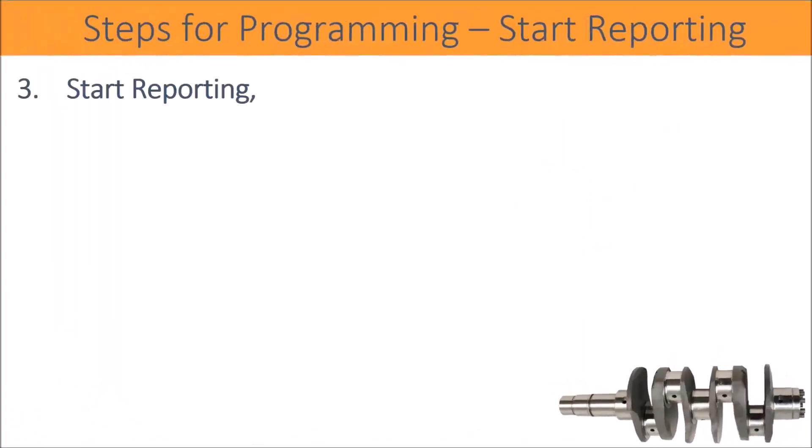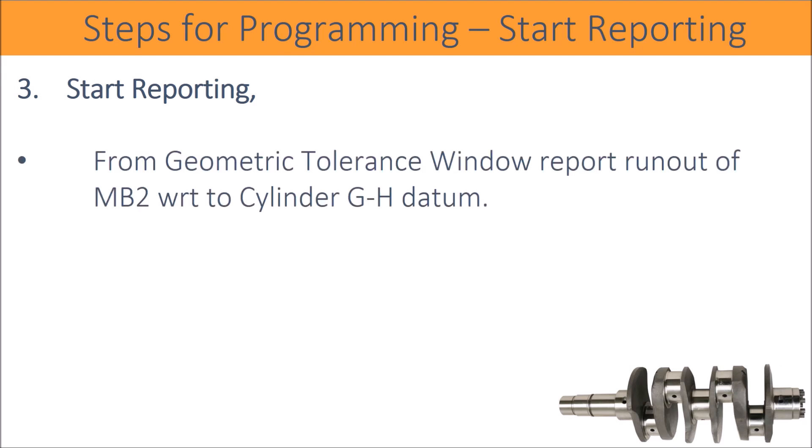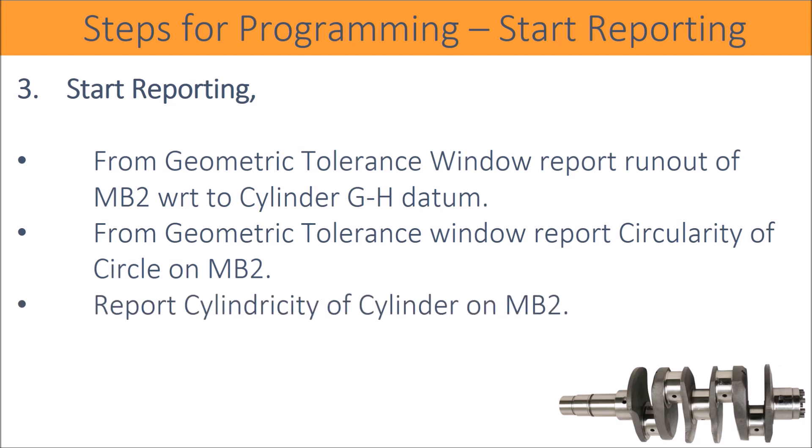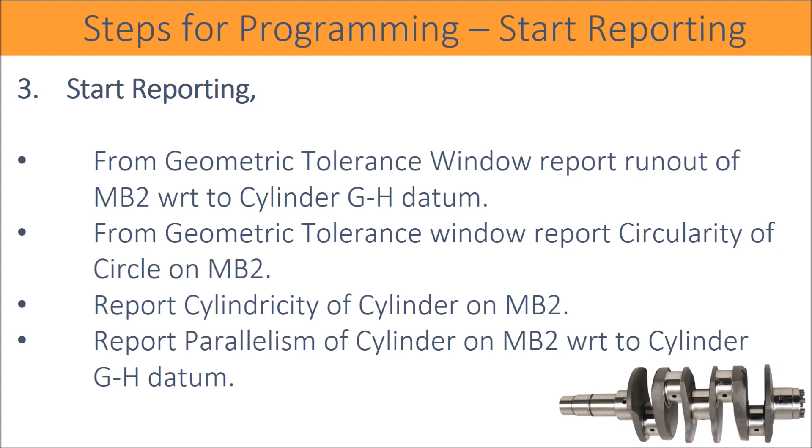Start reporting: From the geometric tolerance window, report run-out of MB2 with respect to cylinder GH datum. From the geometric tolerance window, report circularity of the circle on MB2. Report cylindricity of the cylinder on MB2. Report parallelism of the cylinder on MB2 with respect to cylinder GH datum.